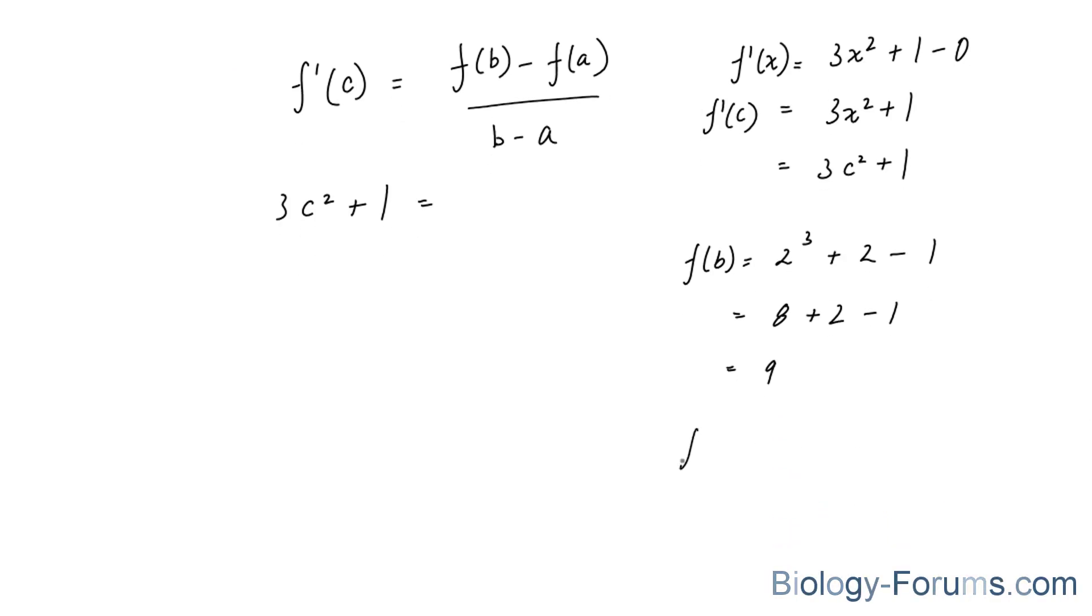And also, f(a): 0 + 0 - 1 equals -1. So that said, we will place 9 here minus -1. b is 2 - 0.